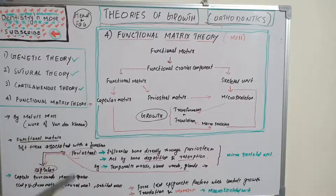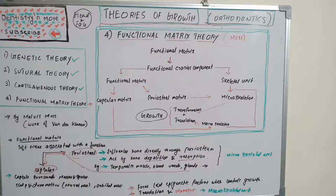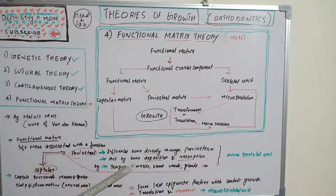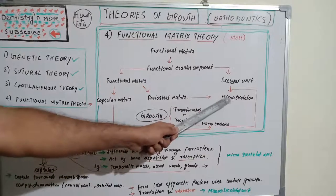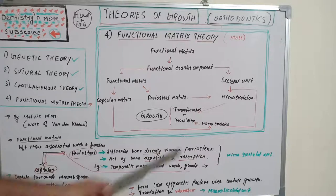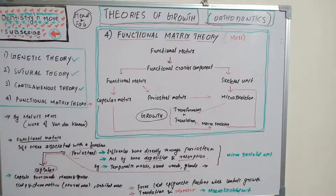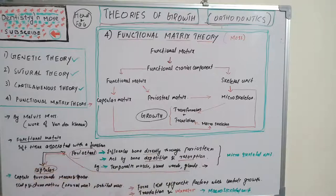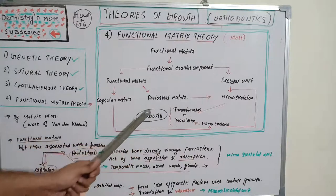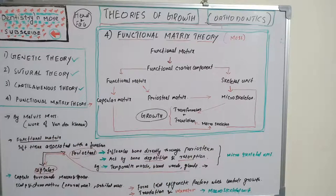The periosteal matrices directly influence bone. Surrounding a bone, they directly influence that particular bone through the periosteum, causing bone deposition and resorption. These are known as microskeletal units. Bone growth occurs by transformation — that is, deposition and resorption. Examples of periosteal matrices include the temporalis muscle, blood vessels, and glands, which cause transformation and growth changes.